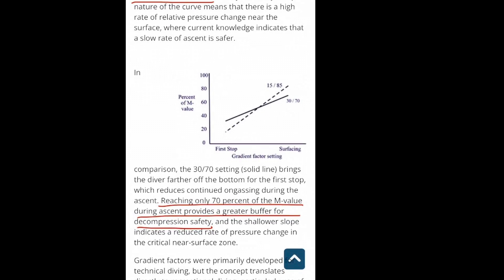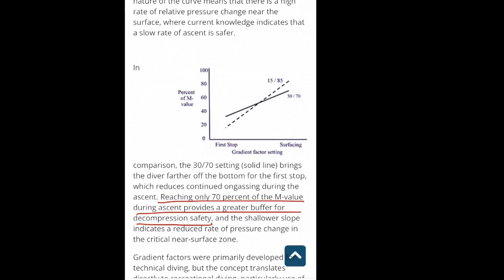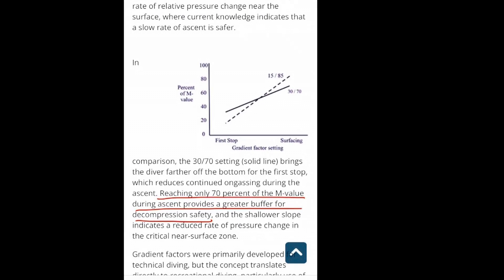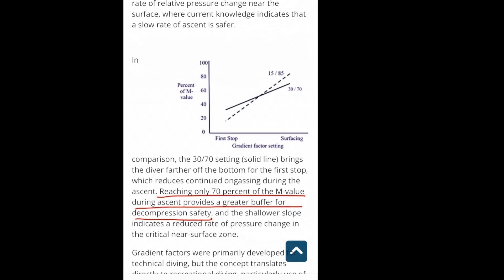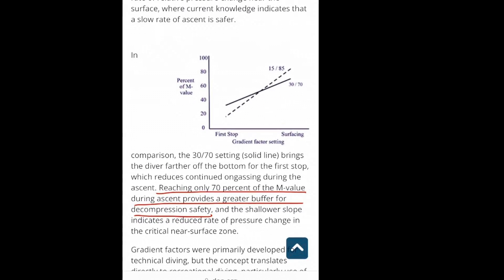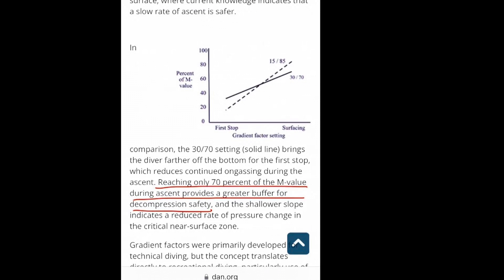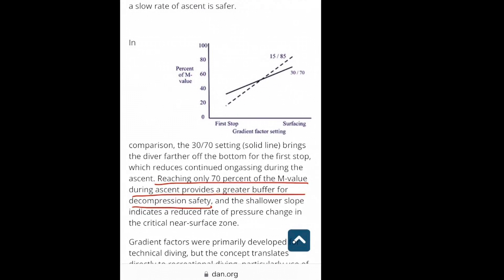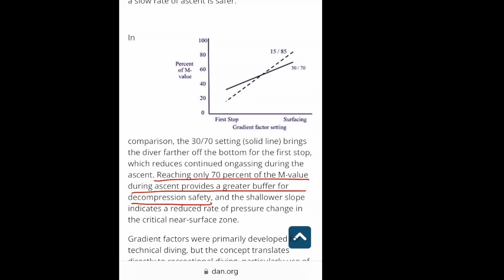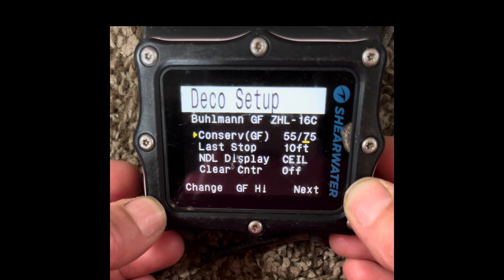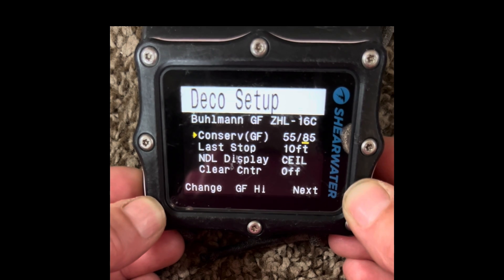Dr. Neil Pollack suggests that reaching only 70% of the M value, or the high gradient factor, provides a greater buffer for decompression safety — he recommends this over the 85% gradient factor suggested elsewhere. Let's head underwater and see what happens when we're diving planning to exit with our tissues 75% saturated versus 95% saturated.